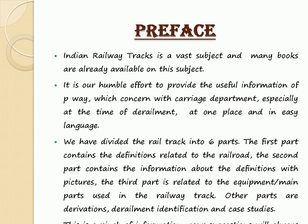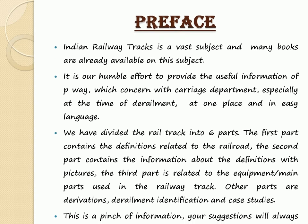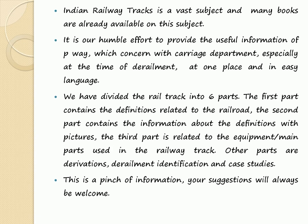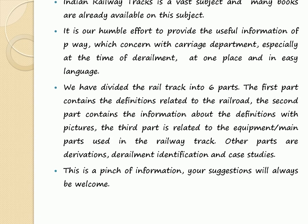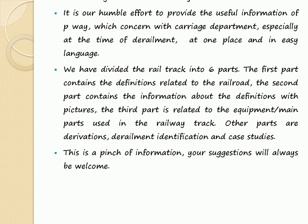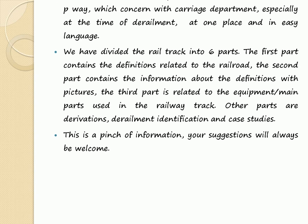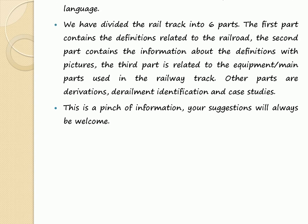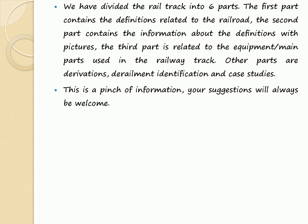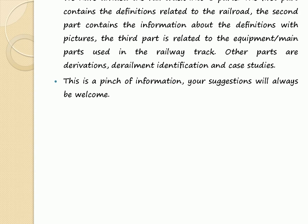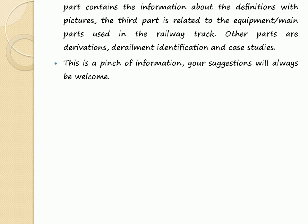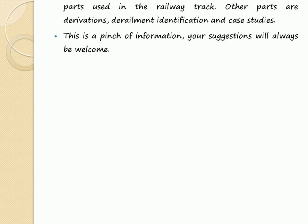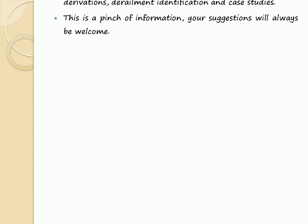We have divided the rail track into six parts. The first part contains definitions related to the railroad. The second part contains information about definitions with pictures. The third part is related to the equipment and main parts used in the railway track. Other parts cover derivations, derailment identification, and case studies. This is a collection of information, and your suggestions will always be welcome.